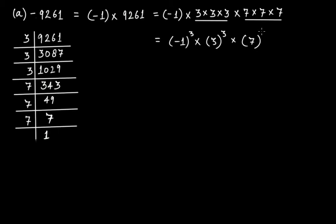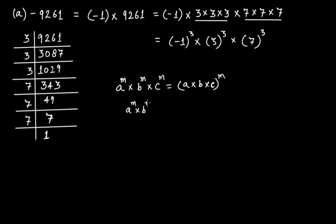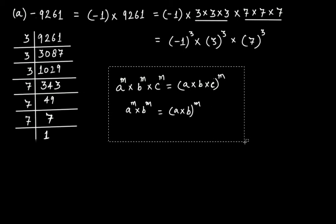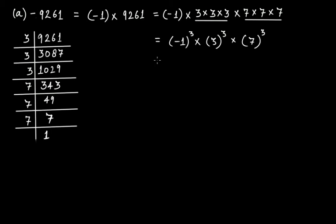Now, have you learned that if you have any integer a raised to the power m, and another integer b raised to the power m, and another integer c raised to the same power m, this can be written as a multiplied by b multiplied by c, all raised to the power of m? This is true for two numbers, three numbers, four, five, and so on. So from this we can write minus 9261 as minus 1 multiplied by 3 multiplied by 7, all raised to the power of 3.